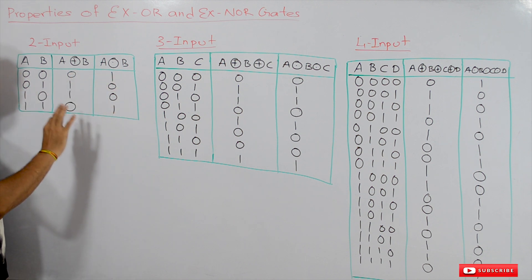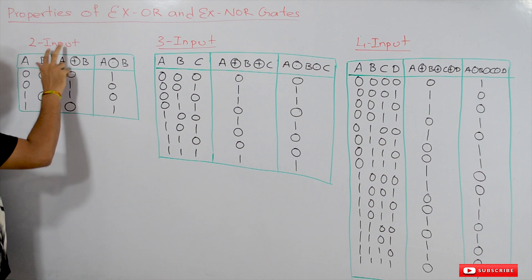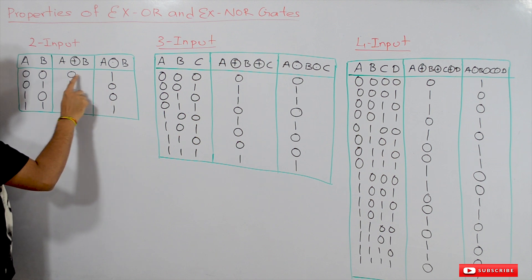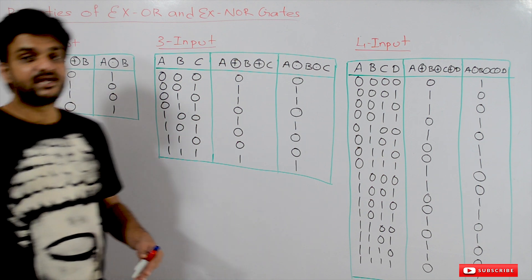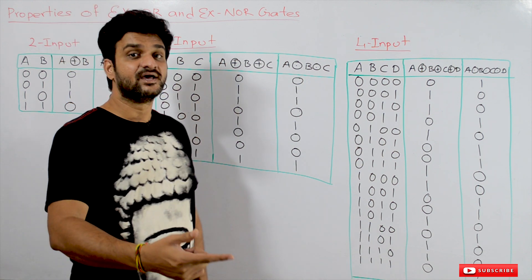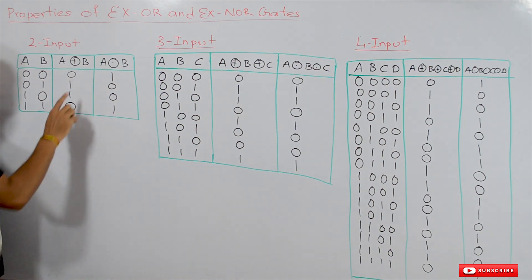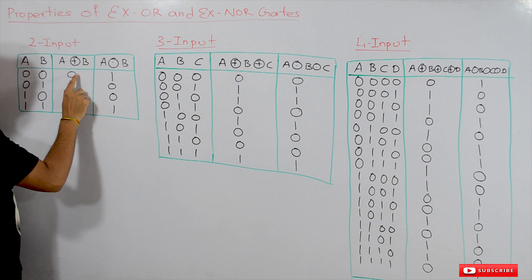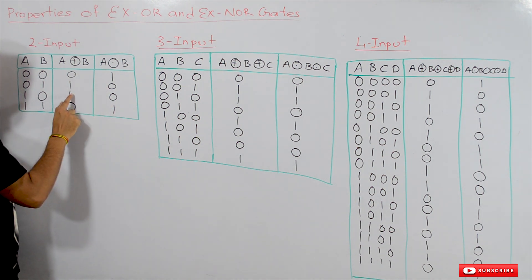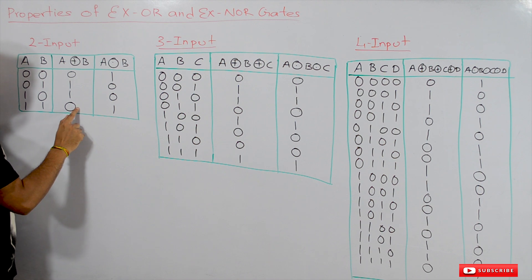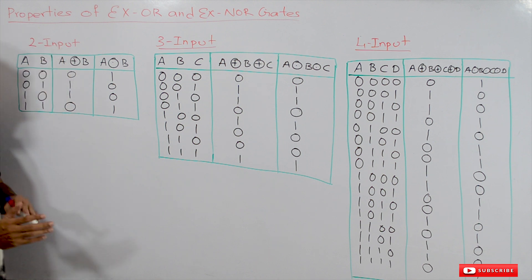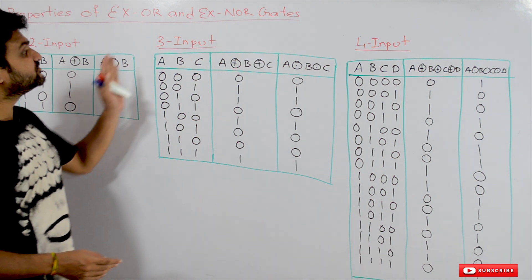For a two-input XOR and XNOR gate, the XNOR is the complement of XOR. As we have discussed, XNOR gate is a NOT-XOR gate — adding a negation to the XOR gate generates an XNOR gate. So for two-input combinations, the output of XNOR is the complement of XOR: zero becomes one and one becomes zero.